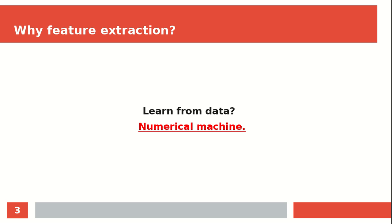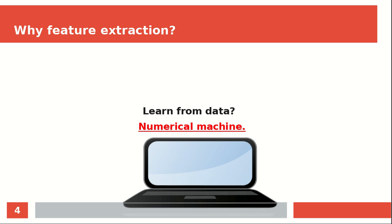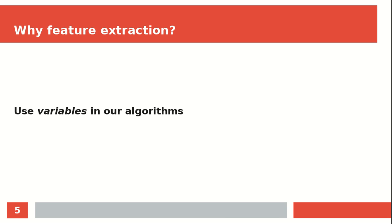That means that if we give it audio, text, or images, it can only understand this data in terms of numbers. And so we want to do a step called feature extraction, which takes variables or numeric data out of this real-world data.